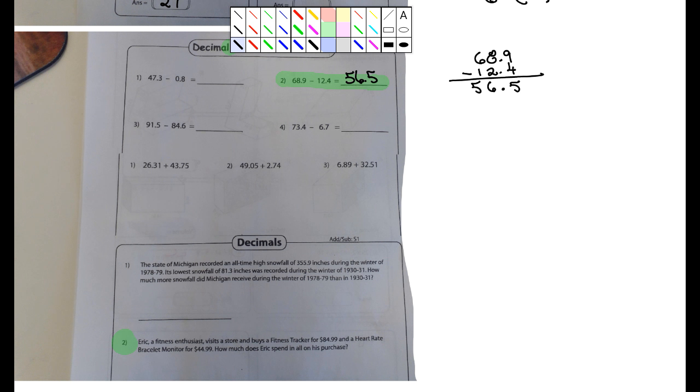I think we did this one in class or I did it on a video. So let's just look at number two here. Eric, a fitness enthusiast, I think I did this one too on a video, but you'd have to figure out and watch all my old videos from the past week or two. So I'm not going to do this one for you. I'll just say that he visits a store and buys a tracker for $84.99 and then a bracelet monitor for $44.99. How much does Eric spend on all of his purchases? We'll just add the two up, just make sure you line up the decimals.